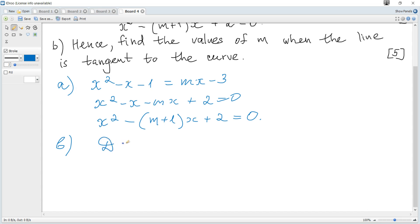So discriminant is b squared minus 4ac. b is this, so squared it becomes (m plus 1) squared. Negative squared is the same as just positive b squared minus 4ac: 4 times 1 times 2, and it must be 0.